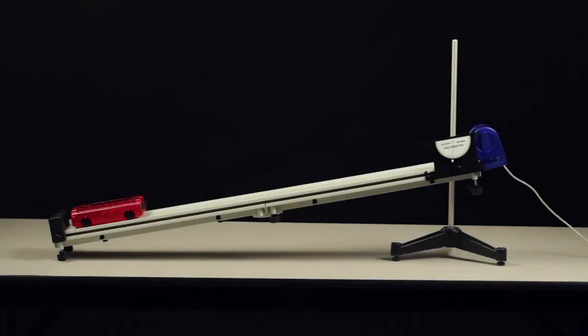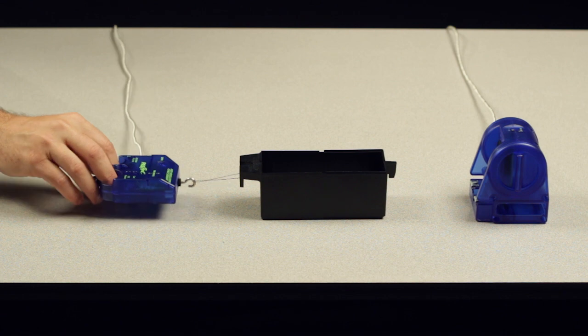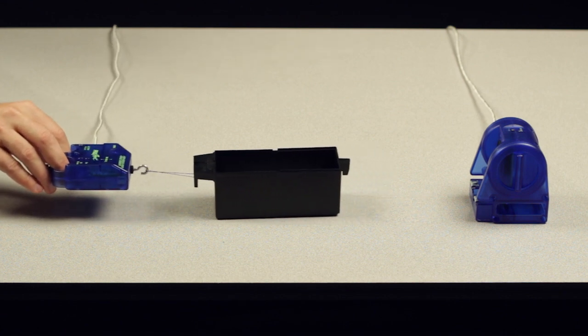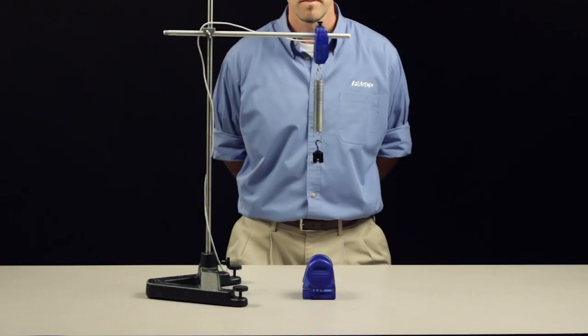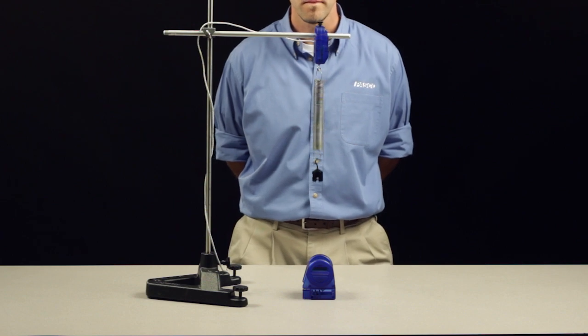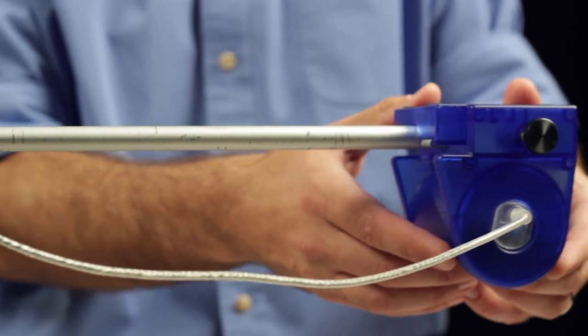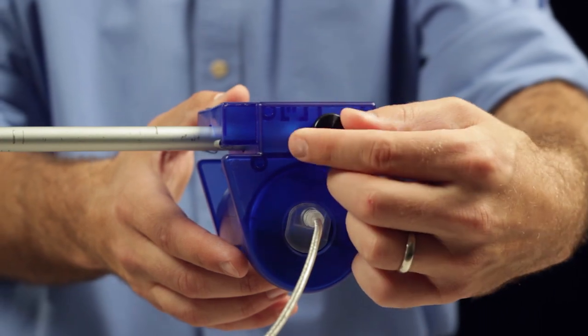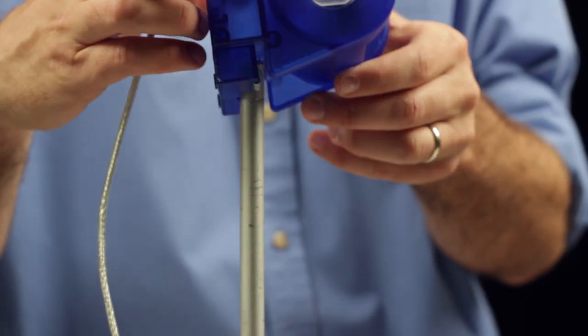The motion sensor can be used in many different configurations including placed flat on a lab table to measure the horizontal motion of an object moving toward or away from it, adjusted to measure the vertical motion of an object, mounted to a support rod vertically, or mounted horizontally.